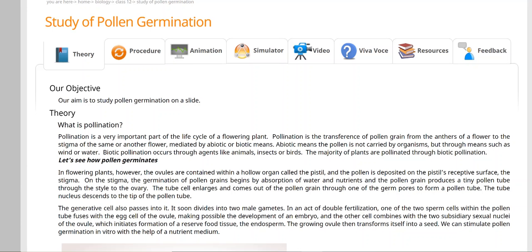Biotic pollination occurs through agents like animals, insects, and birds. The majority of plants are pollinated through biotic pollination. So pollination can be abiotic or biotic. In abiotic there is wind or water through pollination. In biotic there are living organisms like insects, birds, animals.